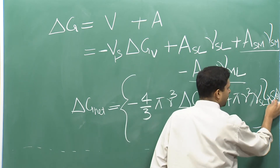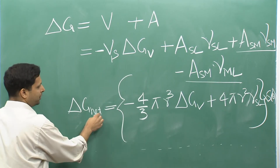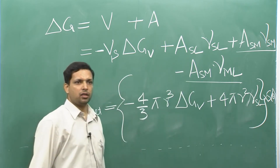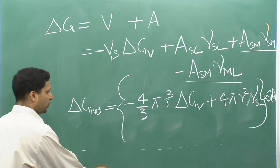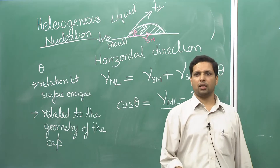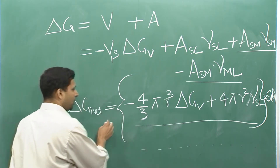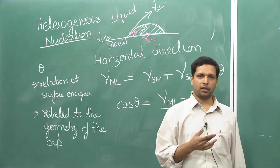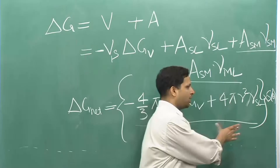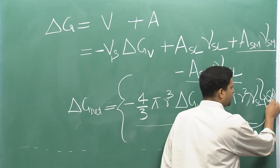There is a factor S which is a function of θ. ΔG_heterogeneous = [homogeneous ΔG expression] × S(θ). This expression in brackets is the same equation as we obtained for homogeneous nucleation — which is remarkable. The only difference is this S(θ) term.